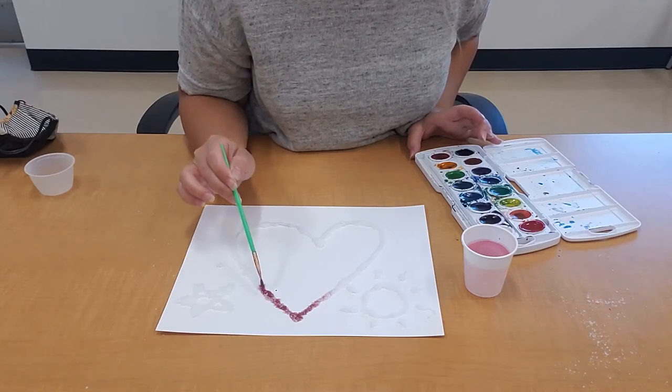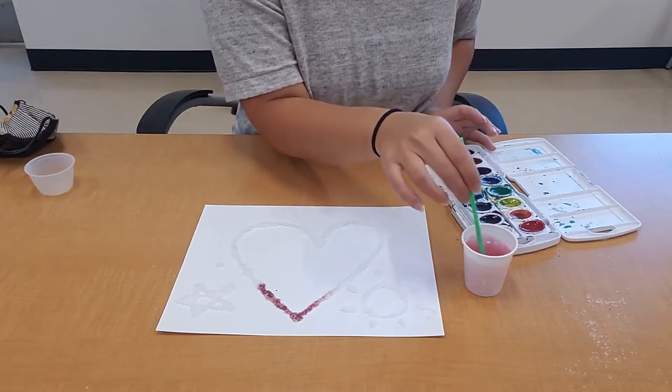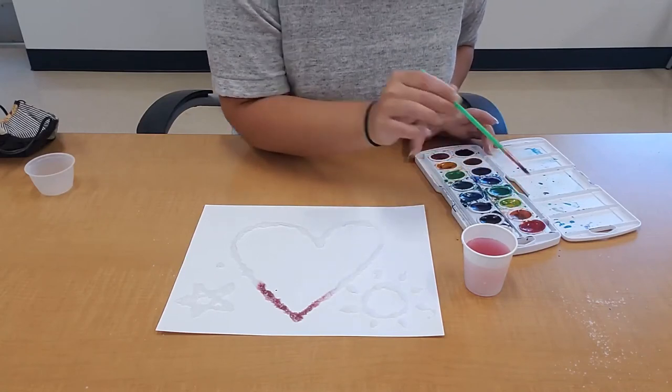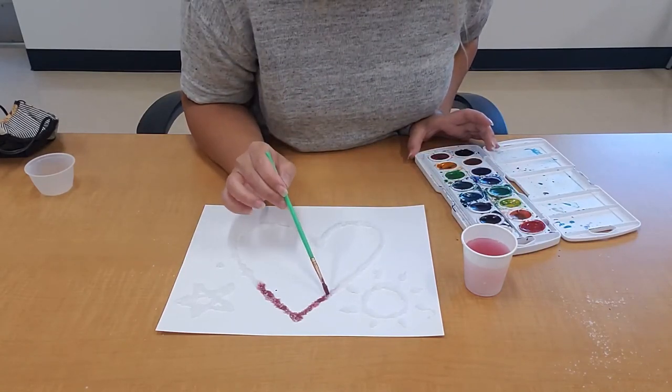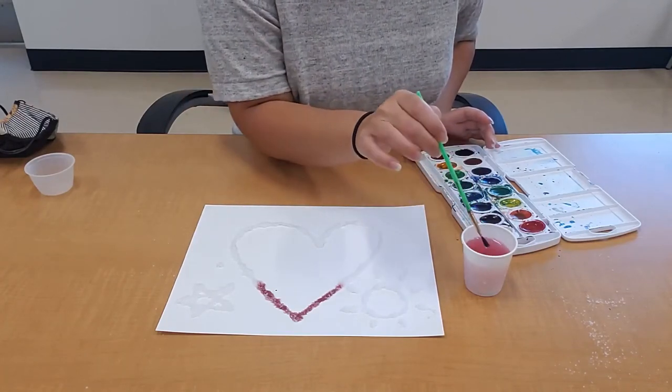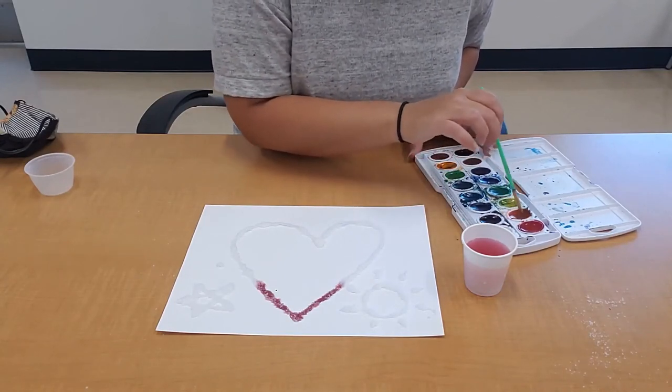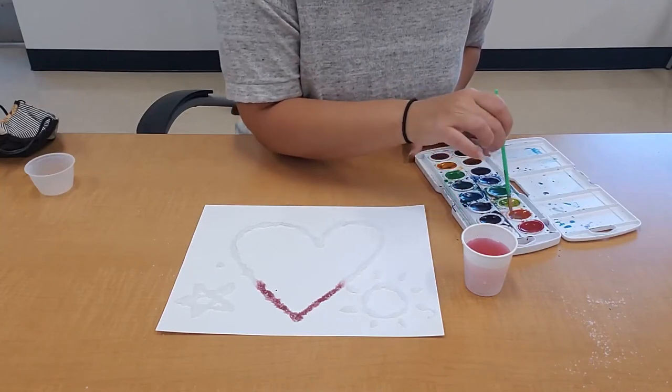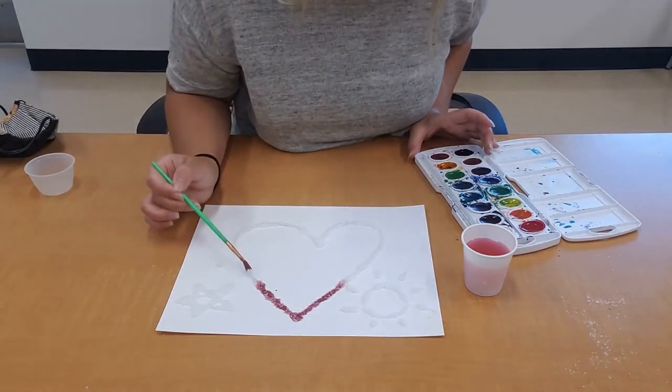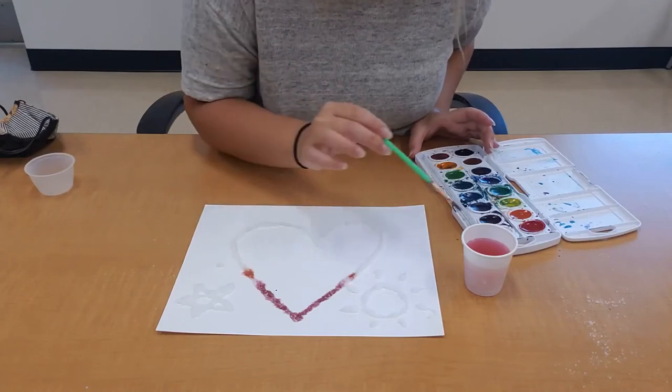And the more watery your paint is, the more the paint spreads. This would be a good way of blending some colors together. For example, I'm going to use some orange next. And instead of painting the orange right next to the red, I'm going to do it just a little bit further so that the colors can blend together nicely.